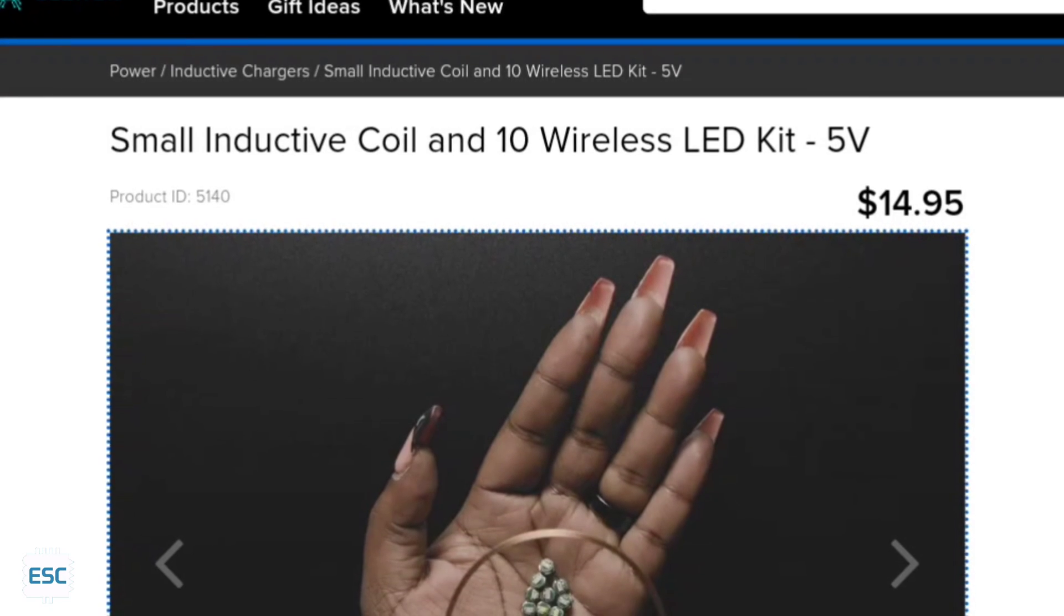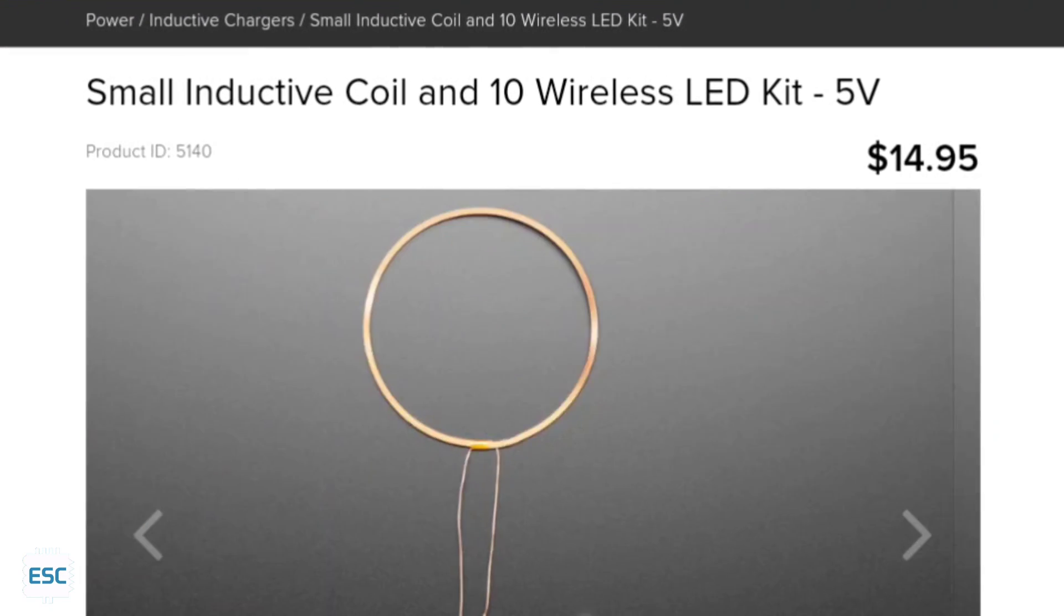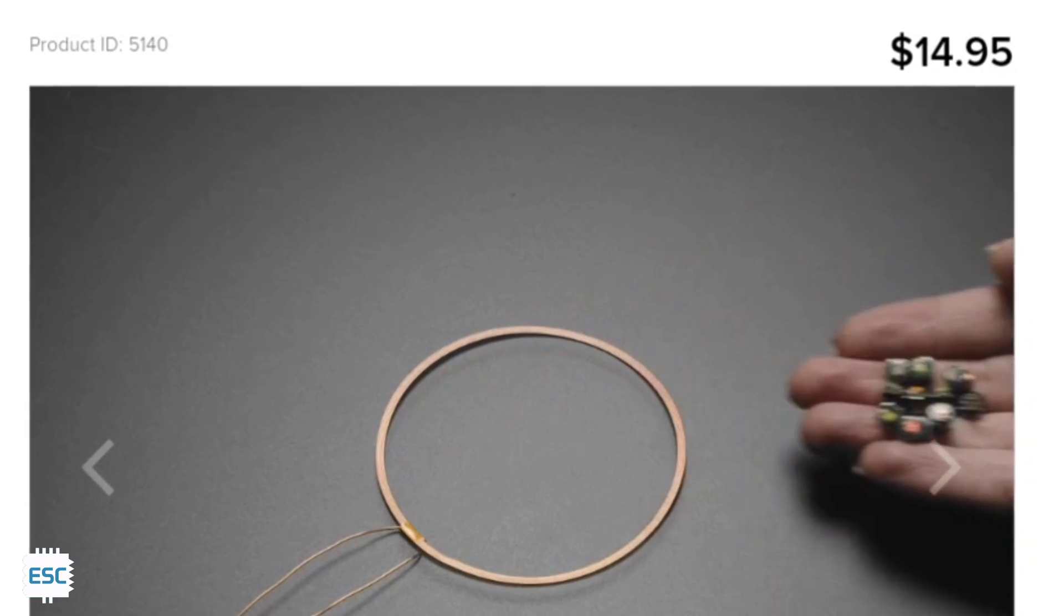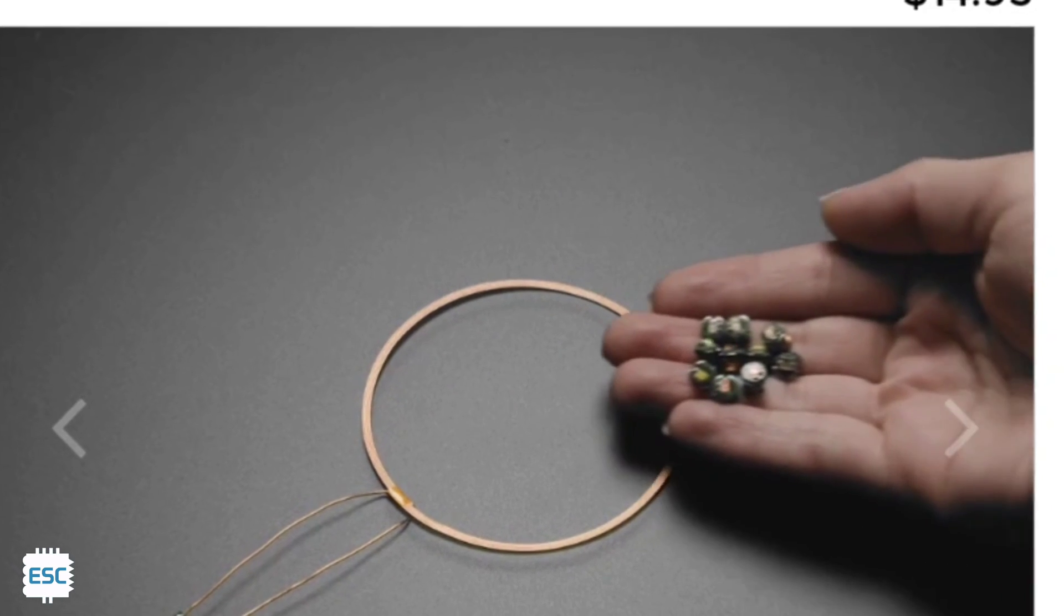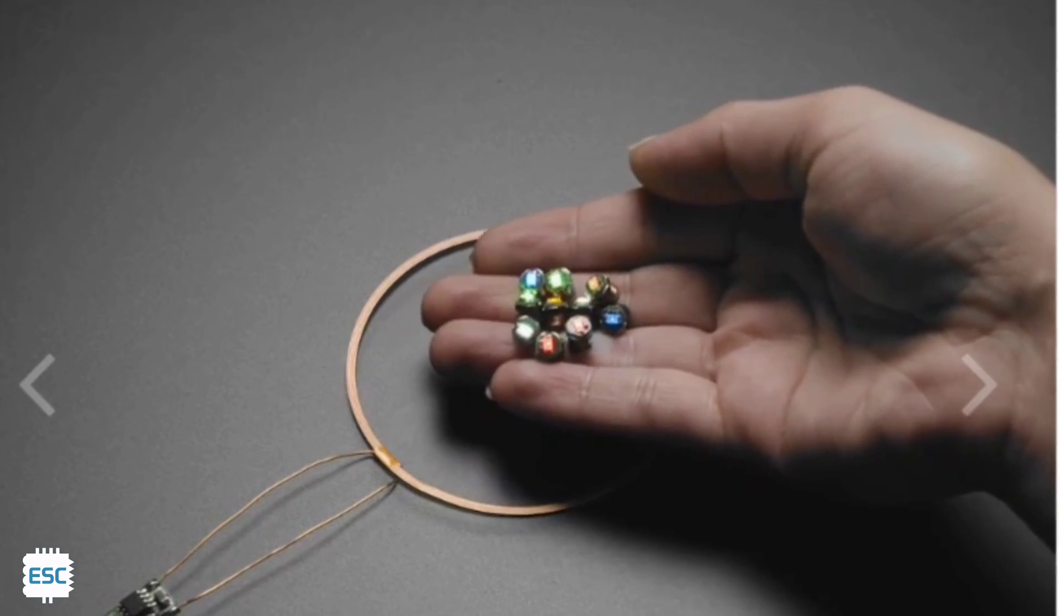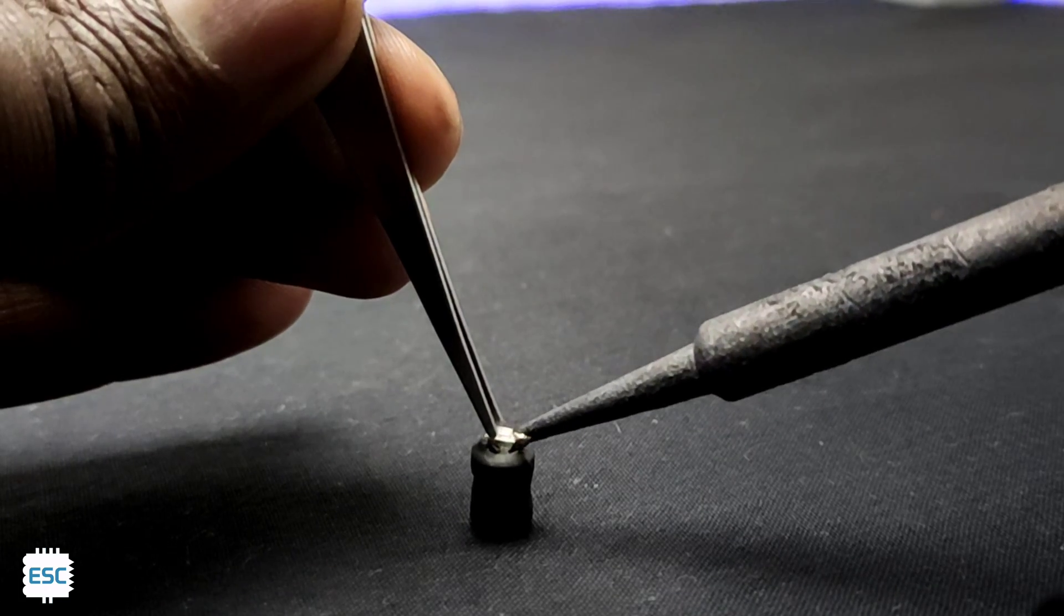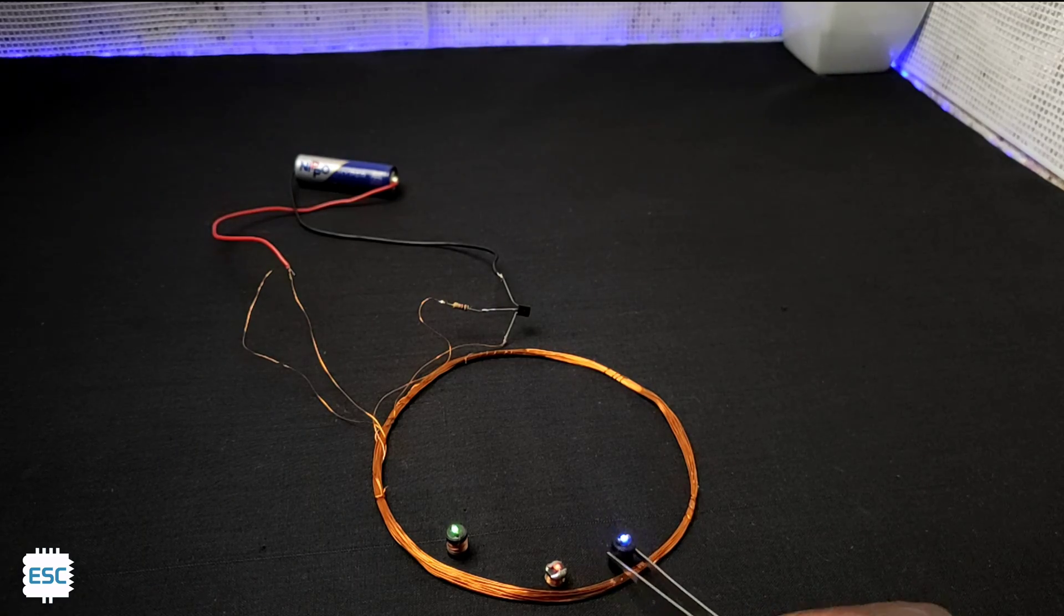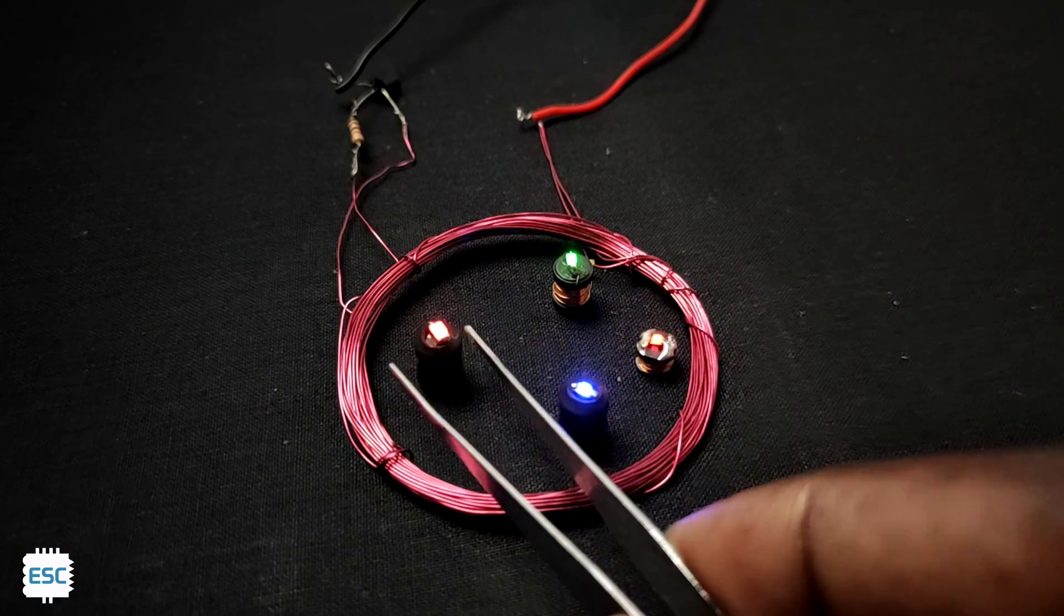Hello there. A few months back Adafruit released a new product called Adafruit wireless LEDs. These are small LED blocks that will light up when they come closer to a big coil. Very nice to see the LEDs and it's working. So I decided to build my version. This video is about how this works and how to make your own. Let's get started.